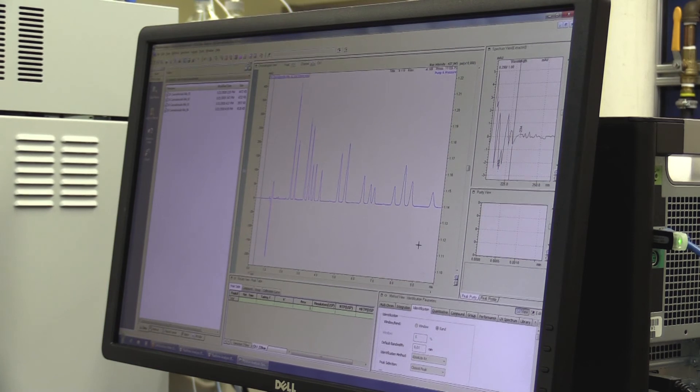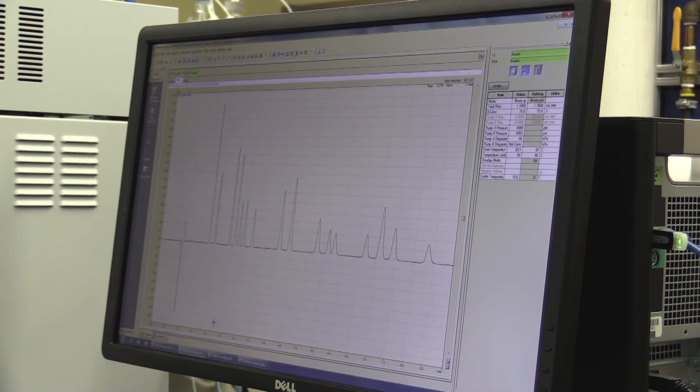All compounds are resolved in this fast nine-minute analysis, making the method suitable for high-throughput cannabis testing labs. In addition, this analysis uses a simple isocratic mobile phase that's easily transferable between instruments, compared to more complex methods that incorporate atypical mobile phase gradients or additives.